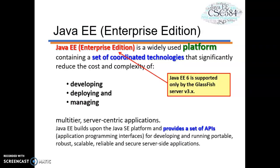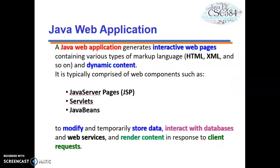Moving on to Java EE Enterprise Edition. It is a widely used platform that contains a set of coordinated technologies that significantly reduce the cost and complexity of developing, deploying, and managing multi-tier server-centric applications. EE is built upon the SE platform and also provides a set of APIs. In Java EE, we can develop Java web applications that generate interactive web pages containing various types of markup language such as HTML, XML, and HTML5, as well as dynamic content. In web components we have JSP, servlet, and also Java Beans.